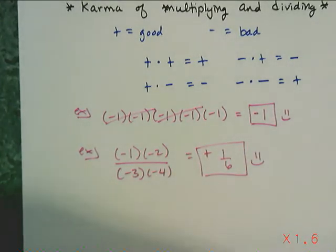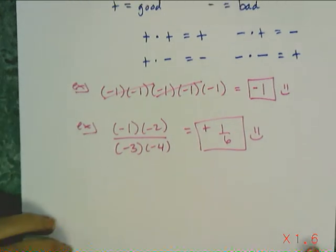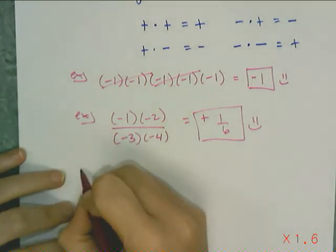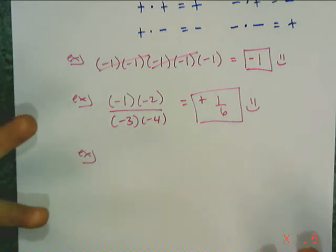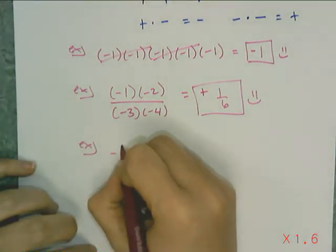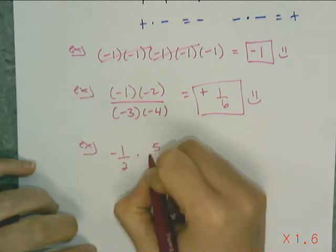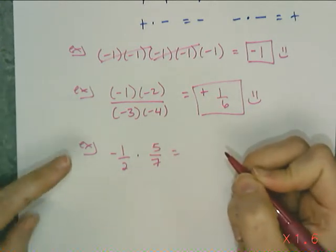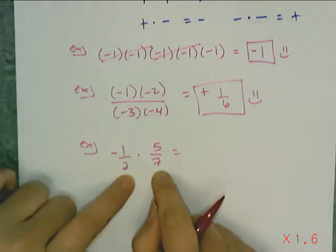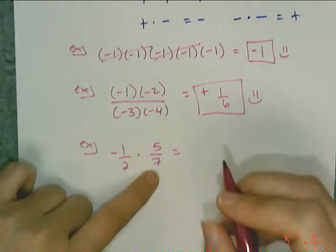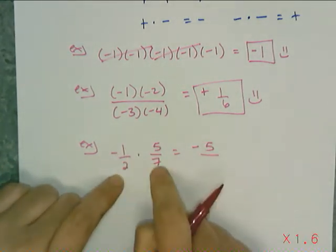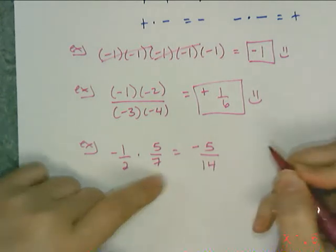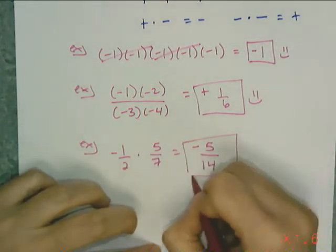Now let's talk about fractions and make some fractions negative. When you multiply fractions, you multiply numerator times numerator and denominator times denominator, and if something is a mixed number, you have to convert it to an improper fraction. So if I have negative 1 half times 5 sevenths, I'm going to knock the sign out at the very beginning — a negative times a positive is bad — so I get a negative. Then I multiply numerator times numerator, denominator times denominator, and check if it can simplify. It can't, so box it off.